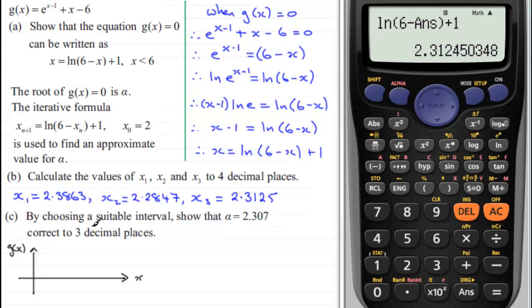So we're told that this graph has a root α equal to 2.307. And we've got to choose a suitable interval to prove this. Well, what we do is we take the lower bound for this. And that, if I just mark it on here, would be 2.3065. We then take the upper bound, just mark it here.